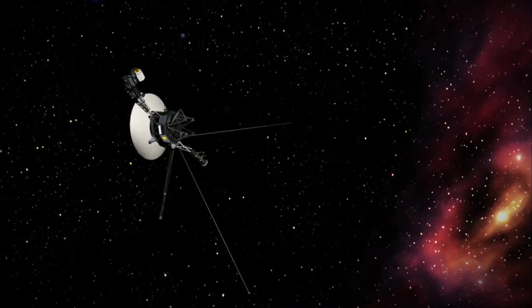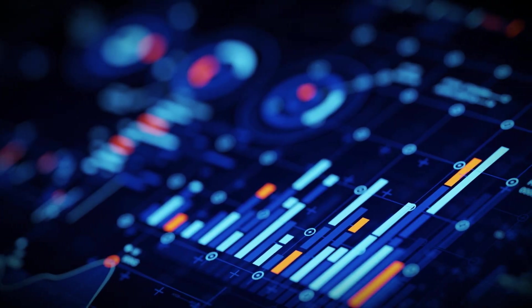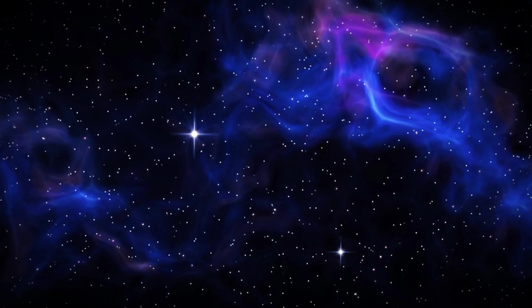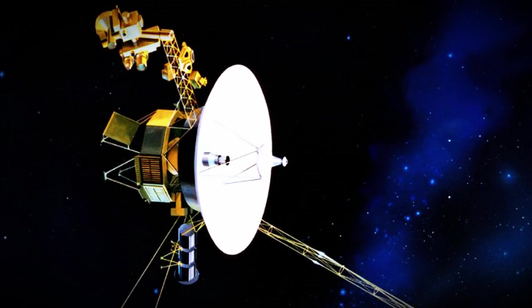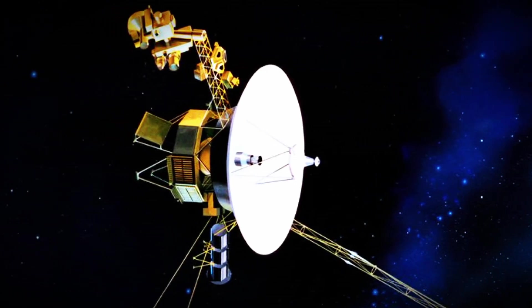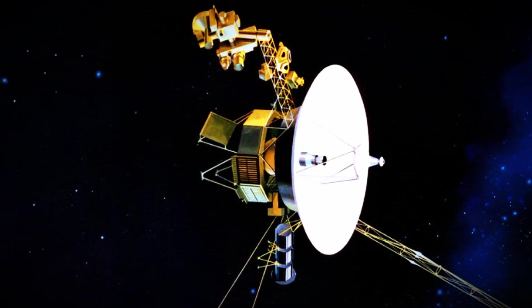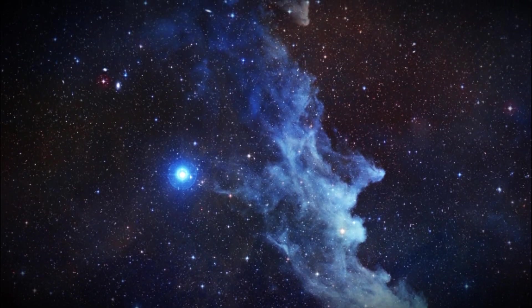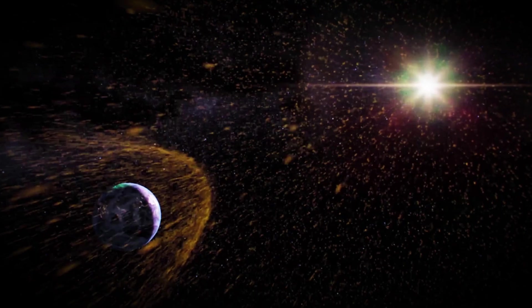Voyager 1 began sending back a puzzling stream of data, random ones and zeros that didn't make sense. It was a cryptic message that needed decoding. This wasn't the first time. Voyager 1 had already sent strange and unusual readings from the interstellar medium on two prior occasions. Not long after entering the vast, mostly empty space between the stars, the probe detected something unexpected: a mysterious stream of plasma that shouldn't exist in that region.